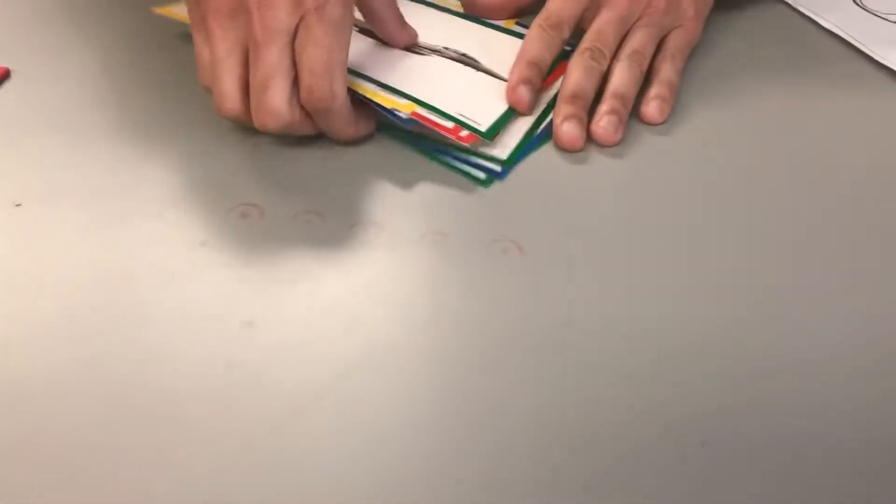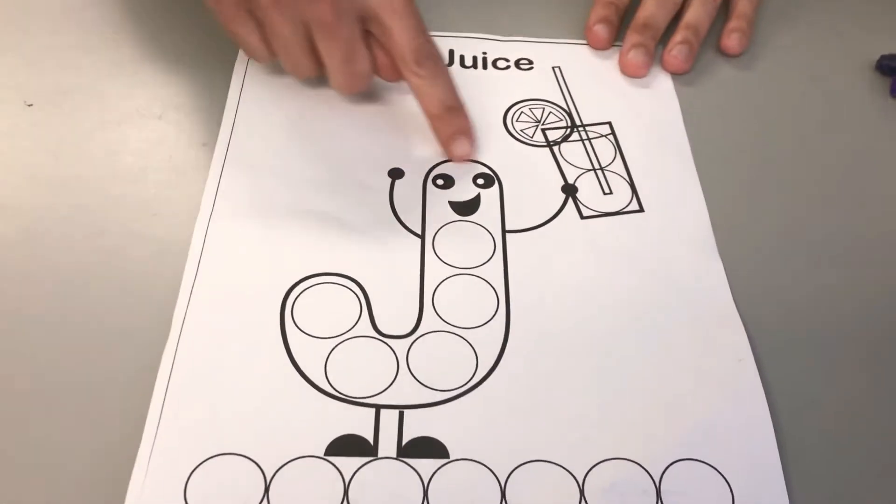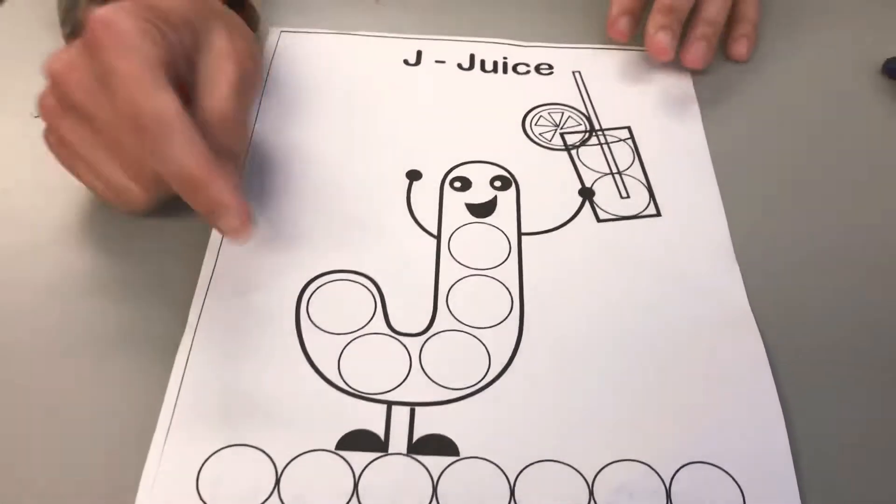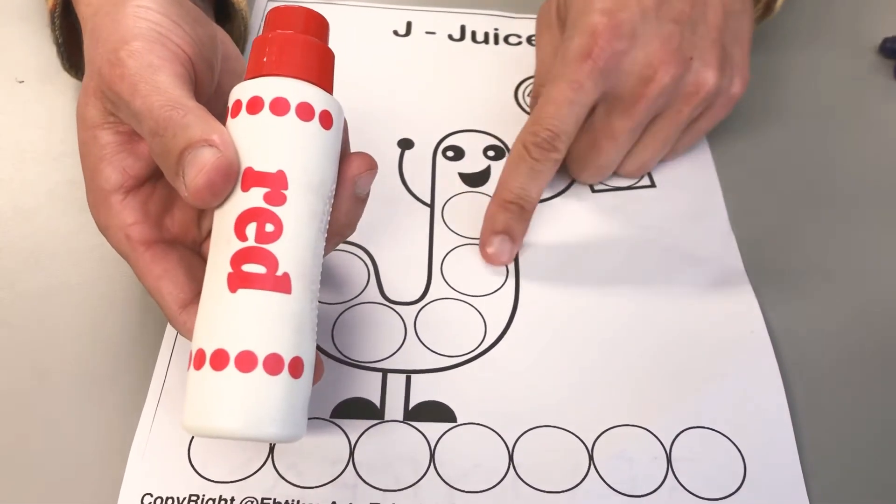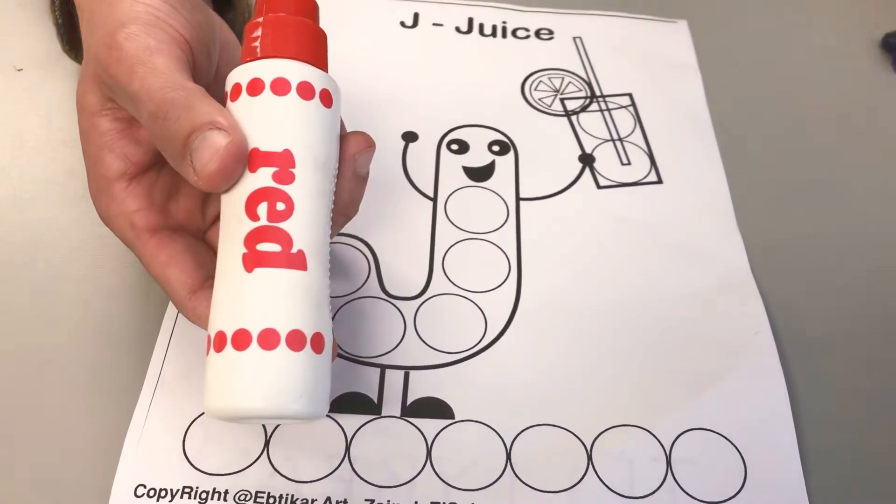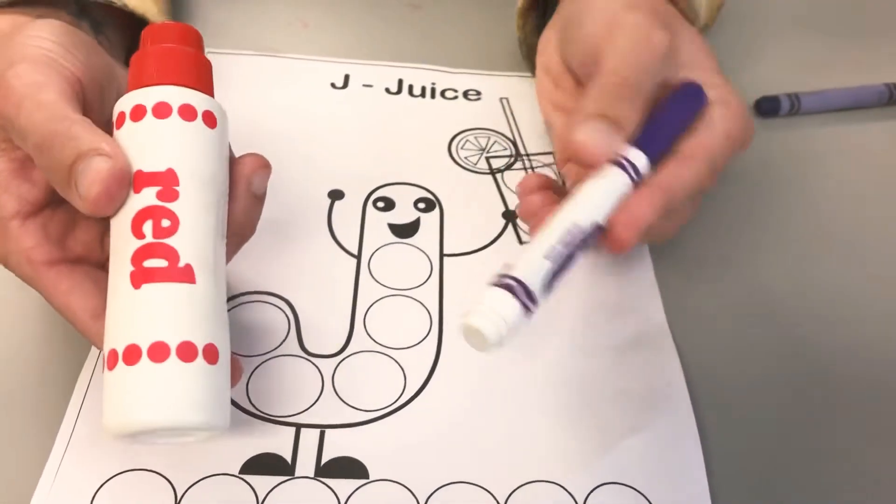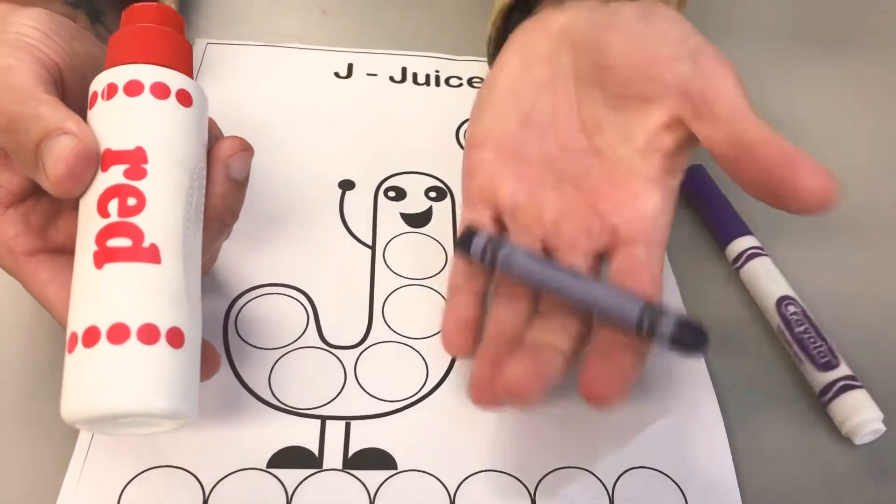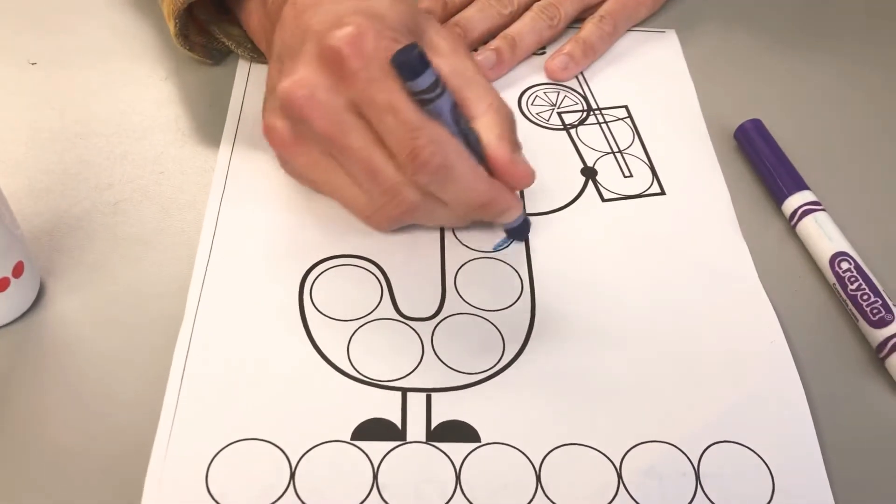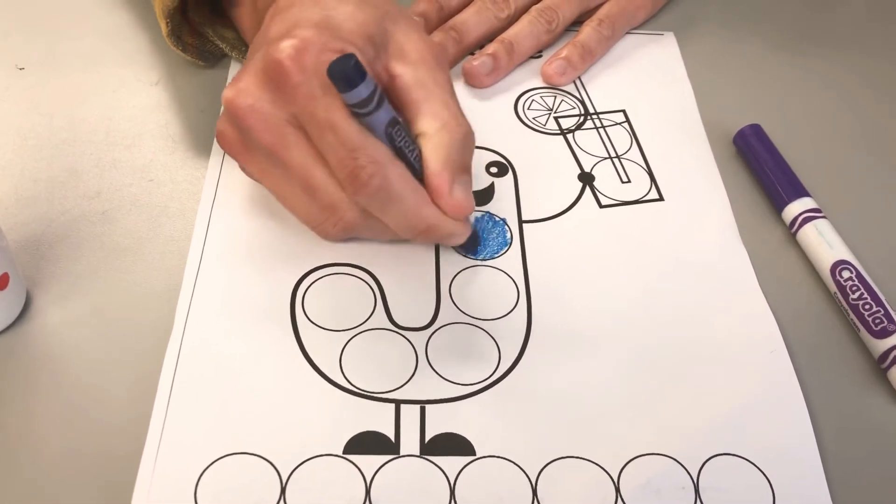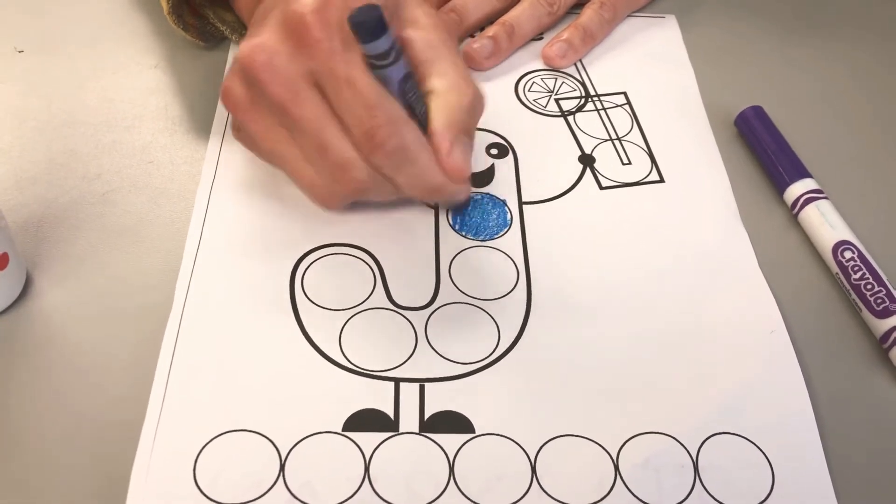Okay, so now today we've started our project with the letter J for juice. And at school we used dot paint when we color in all the circles, but if you do not have any at home you can also use a marker, you can also use a crayon, so I'll do all three. So if you have a crayon, color in that circle like that. Make sure to start at the top.